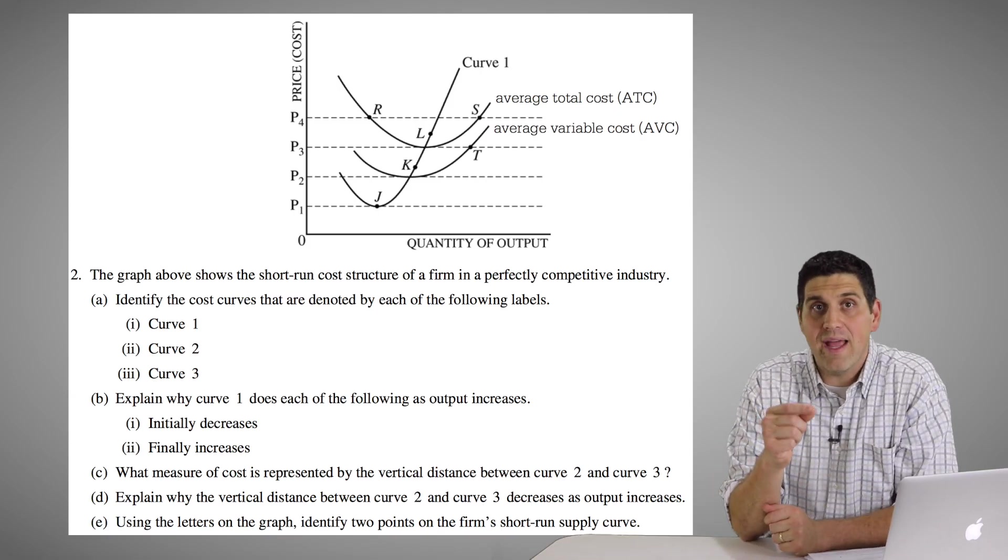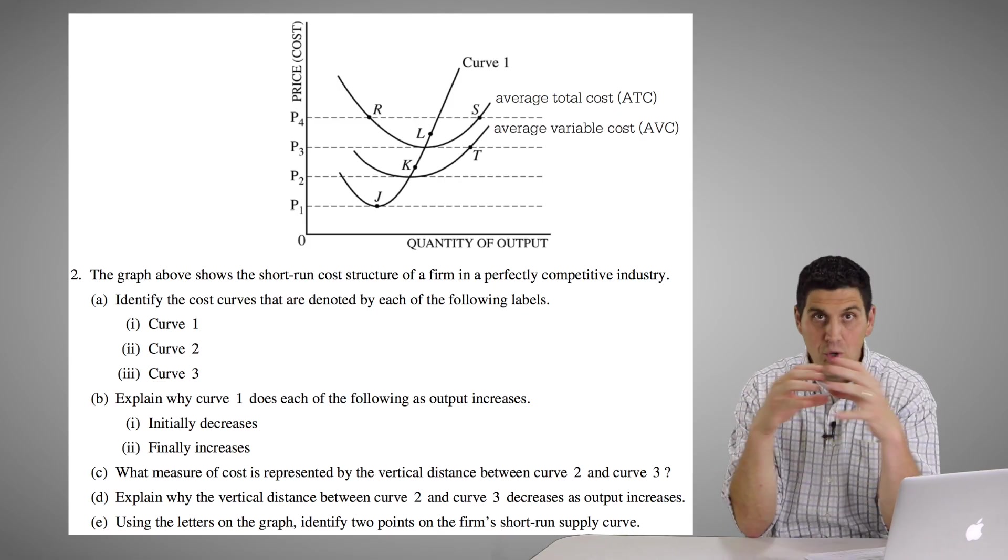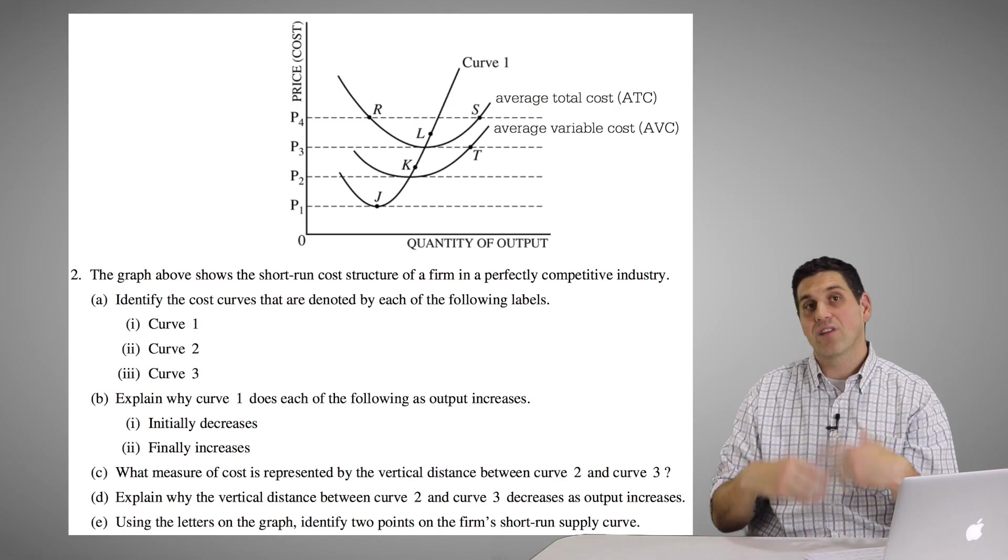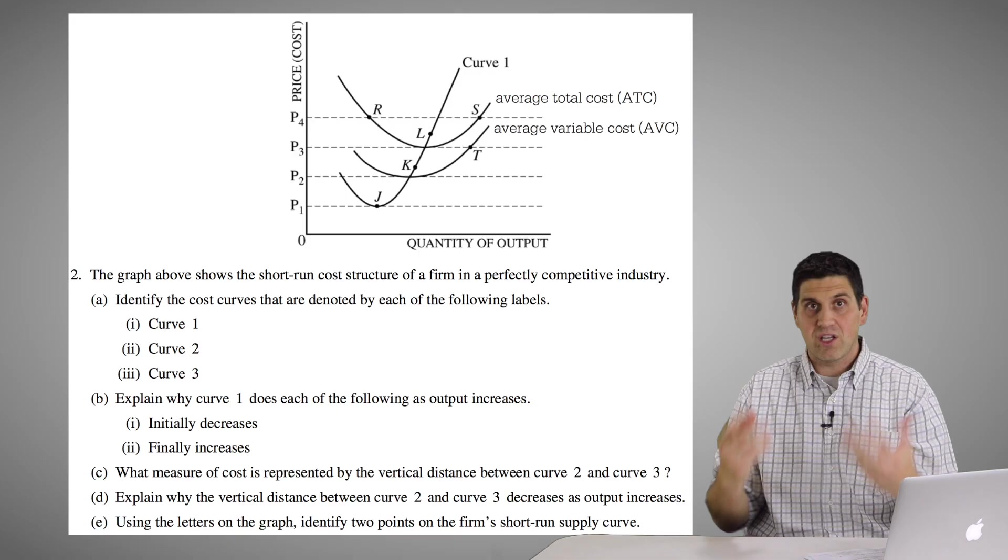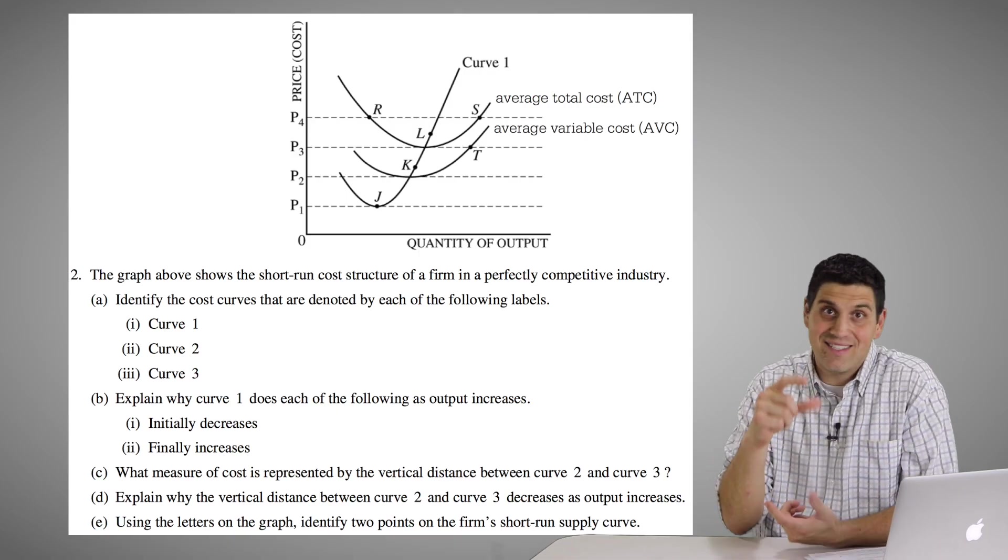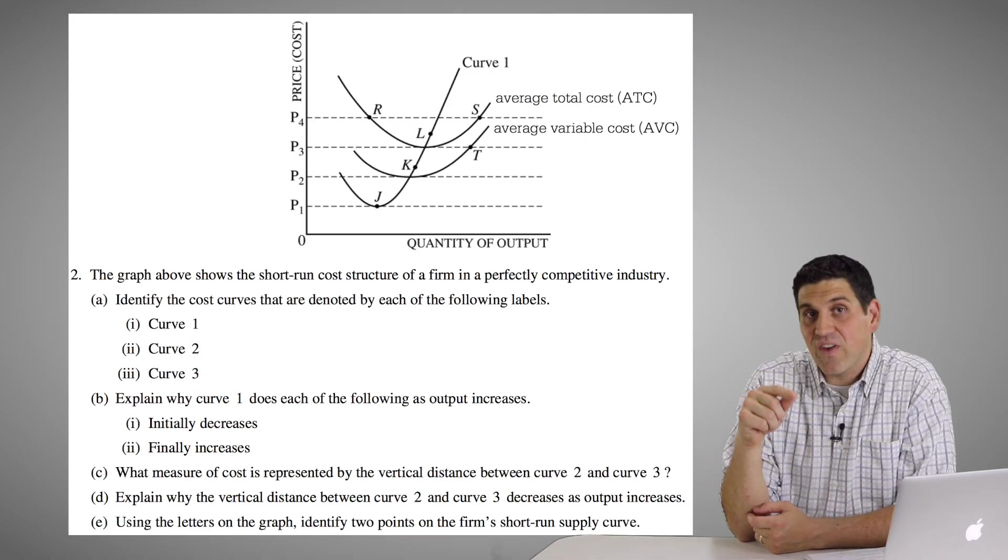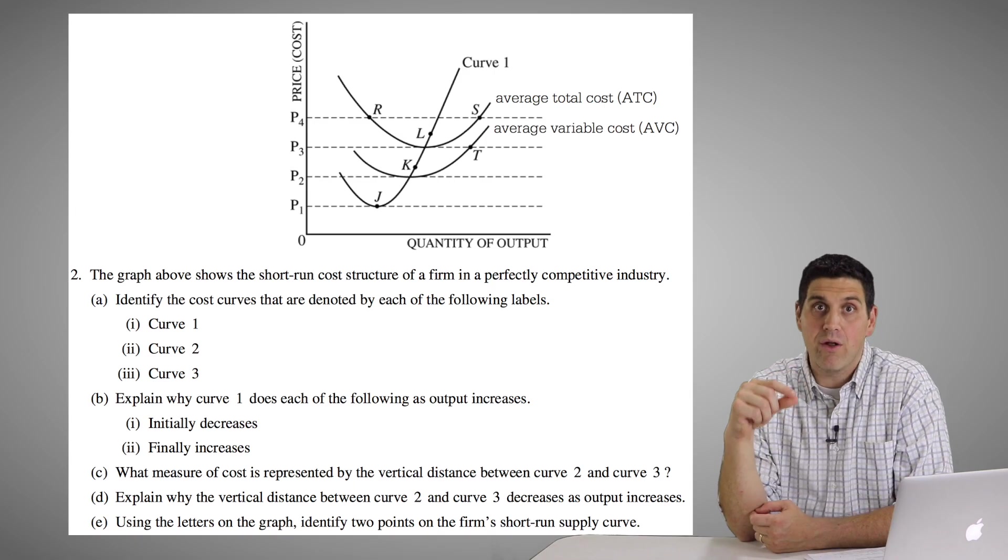The reason why is because fixed costs are fixed. It's a set number in the numerator. And the denominator is the quantity. So as you increase the quantity and the fixed cost stays the same, the average fixed cost is going to keep getting smaller and smaller. It's an asymptote.